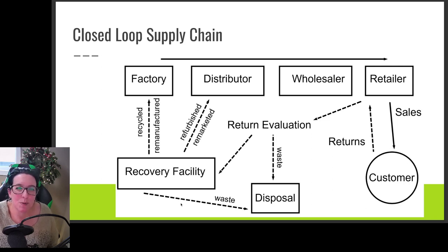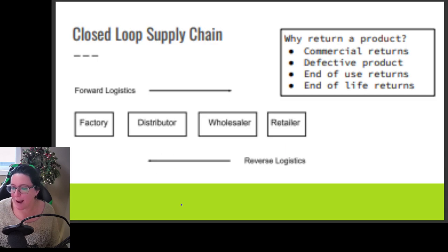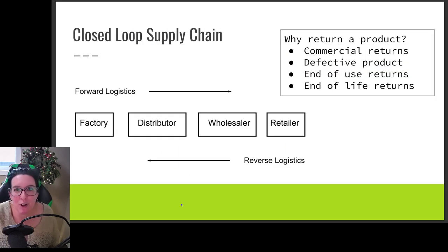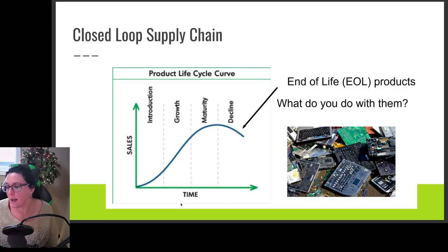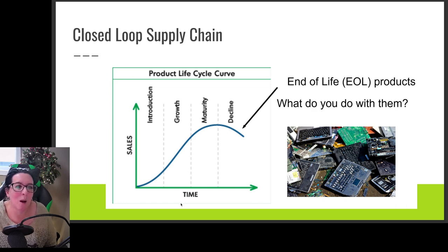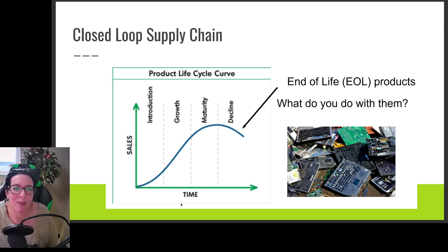We manage a closed loop supply chain the same way you manage a supply chain — we just recognize that we are dealing not only with forward logistics but reverse logistics as well. When we look at reverse logistics, we need to determine why a product is being returned: it just doesn't fit, so it's a commercial return; maybe it doesn't work, so it's defective; or maybe the customer has had it a while and it's either end of use or end of life. We don't want these end of life products to go in the landfill — can they be recycled or pieces of them reused? Companies in the supply chain can help reduce landfill waste. We see this a lot with electronics recycling and battery recycling, often done through companies that are part of the supply chain.